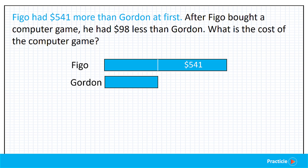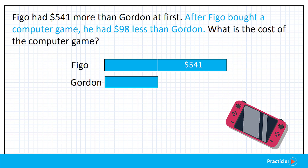Now let's move on to the change. After Figo bought a computer game, he had $98 less than Gordon. We know a change happened because Figo spent some money to buy a computer game, but we don't know how much he spent. So let's look at the after situation. As a result of buying his computer game, Figo had $98 less than Gordon. Since Figo had less money than Gordon in the end, his model must be shorter than Gordon's. So let's draw a line — it doesn't have to be exact, but it must be shorter than what Gordon has.